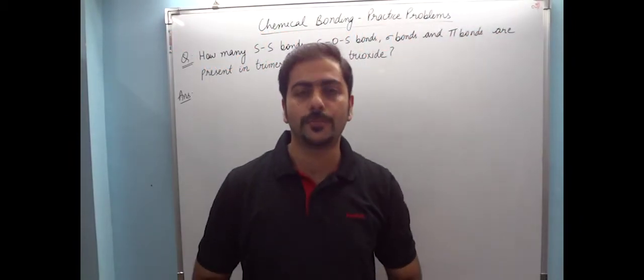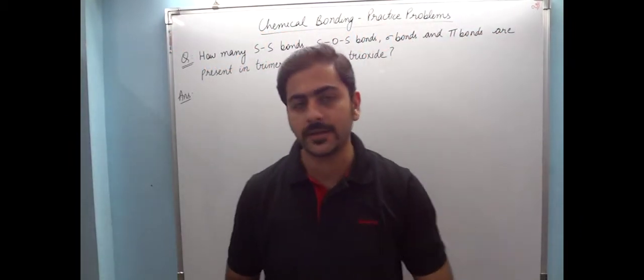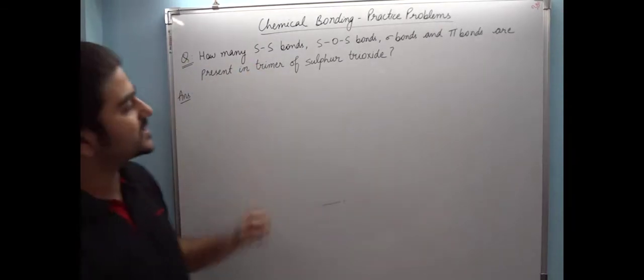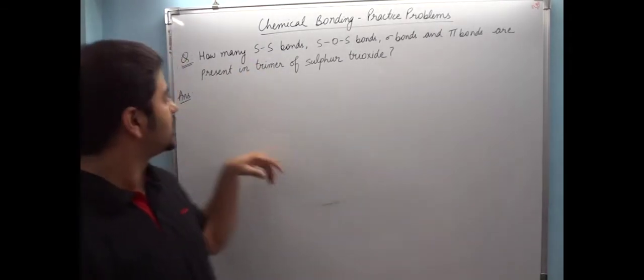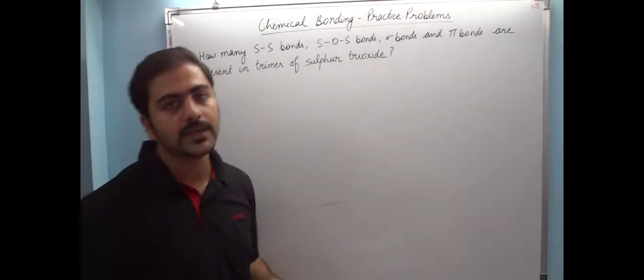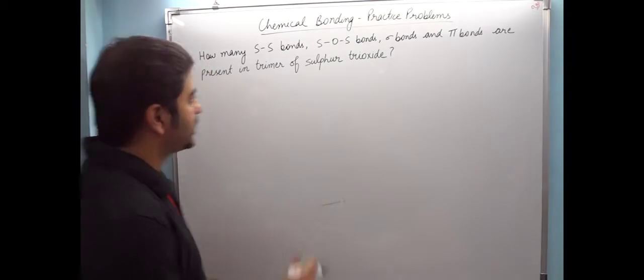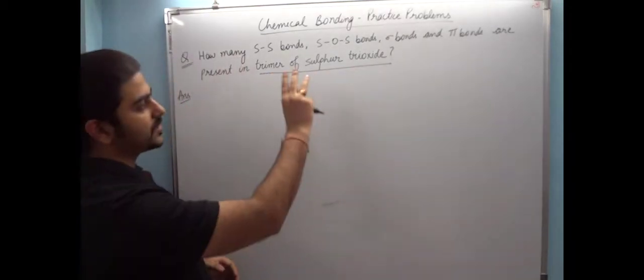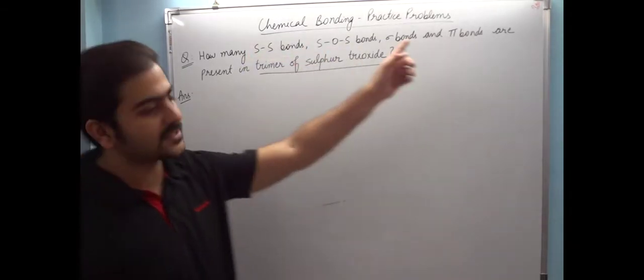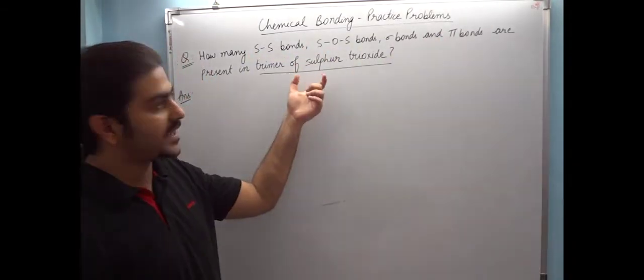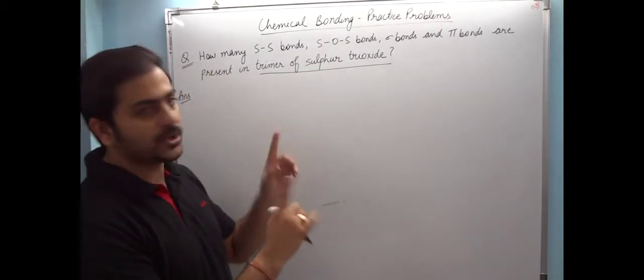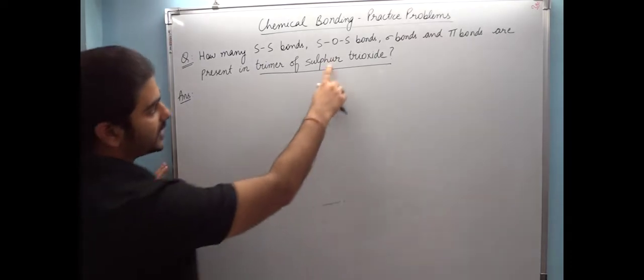Hi friends, let's do one more practice problem on chemical bonding. The question is, how many SS bonds, SOS bonds, sigma bonds, and pi bonds are present in trimer of sulfur trioxide? First thing is, if you know the shape and structure of this trimer of sulfur trioxide, then the answer will be very easy. And in fact, this is very important because many questions are asked on this shape.